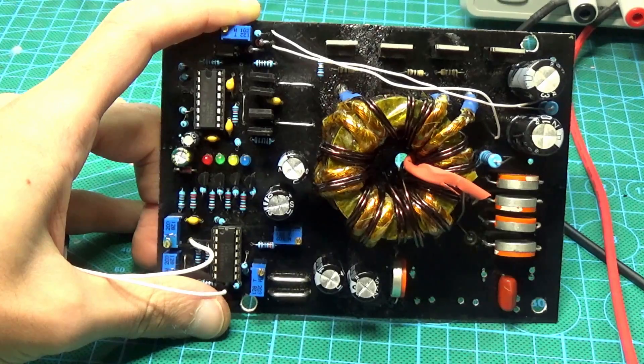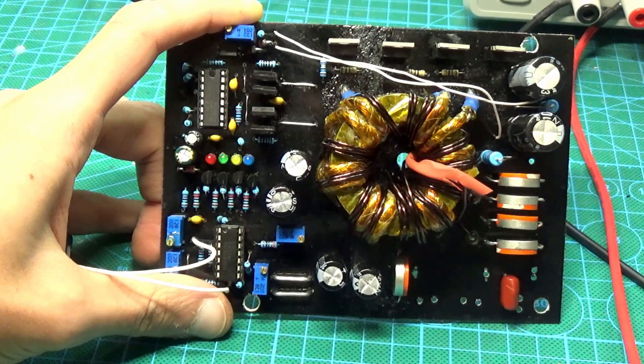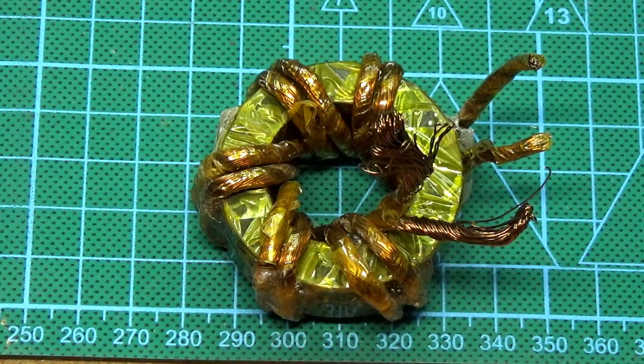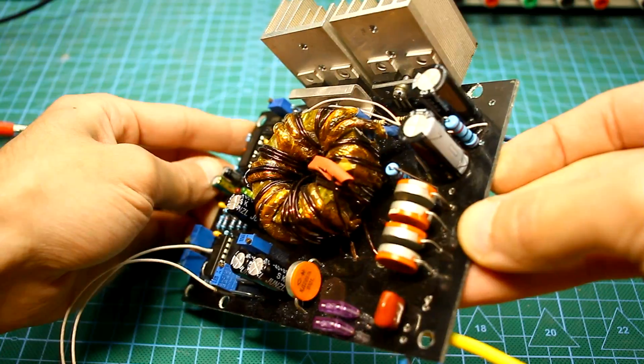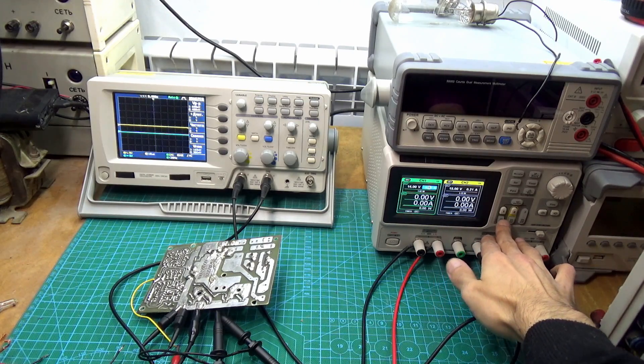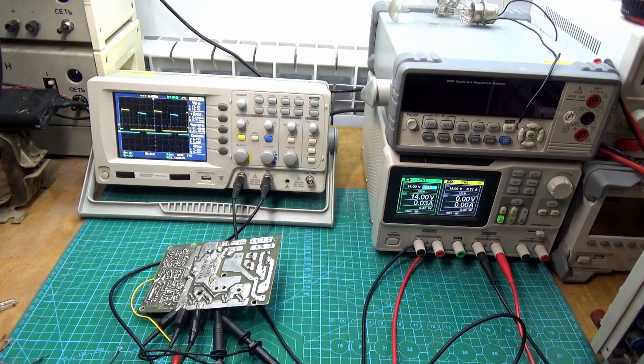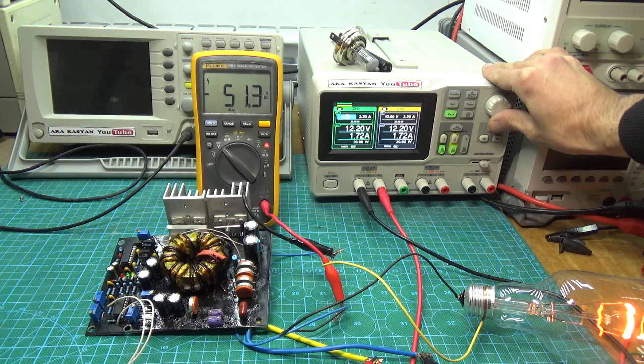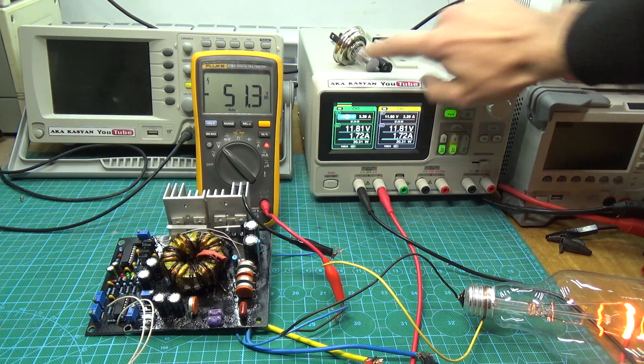Fifth, I categorically don't recommend the circuit for repetition to people who previously didn't have experience with pulse power supplies. Sixth, the circuit doesn't need adjustment. You only need to set the required output voltage and thresholds for the protection.